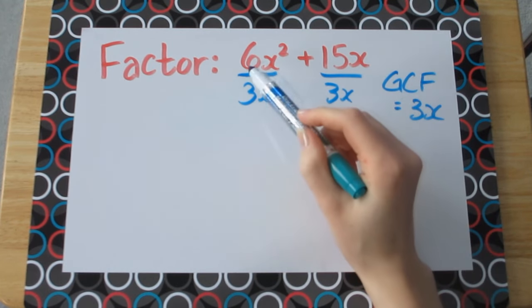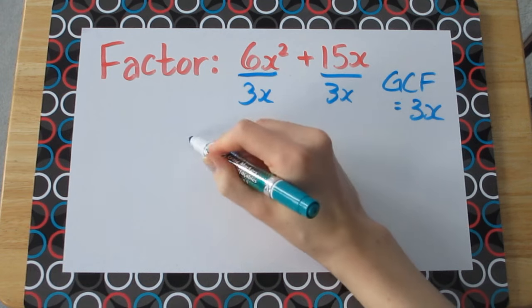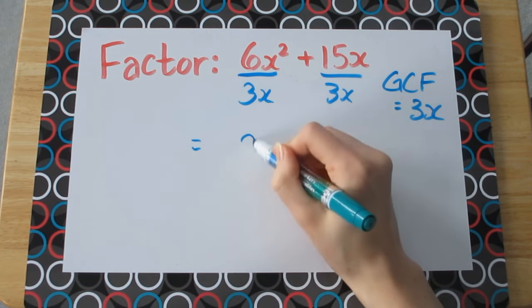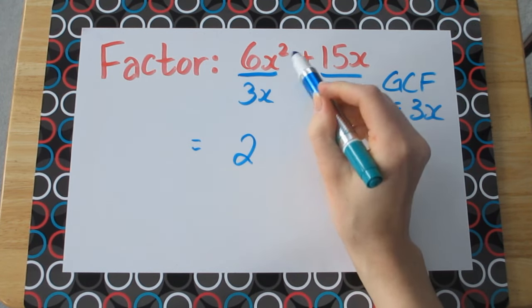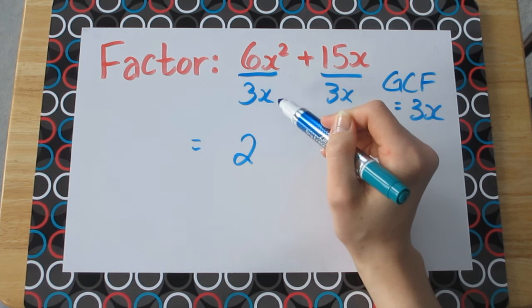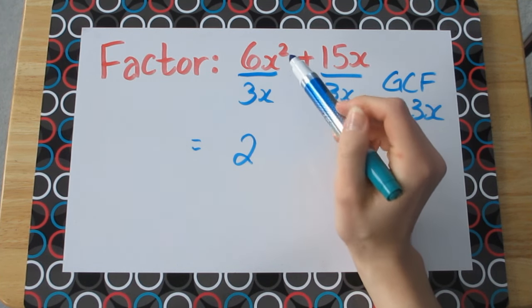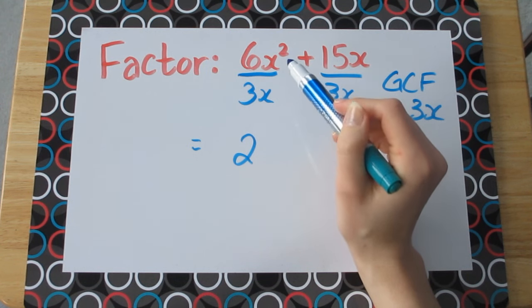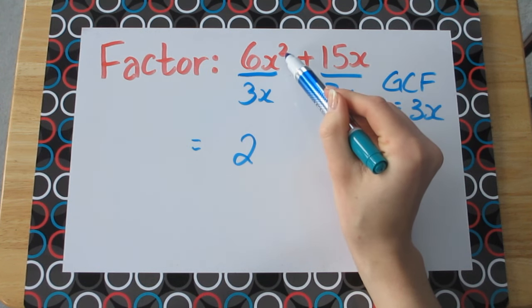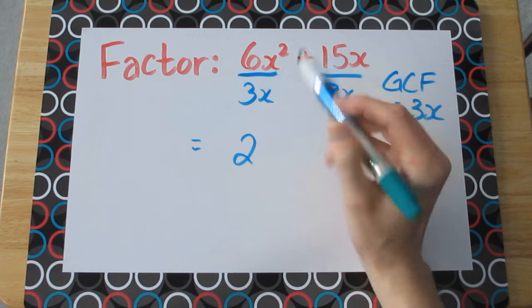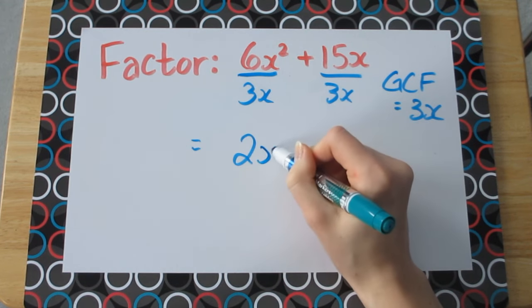So let's move forward. Let's do the coefficients first. So we have 6 divided by 3, that will give us 2, and we have x squared divided by x. Remember back to our exponent laws, when we're dividing we want to subtract exponents. So that means we're going to subtract 2 minus 1, and that'll give us just a single power of x.